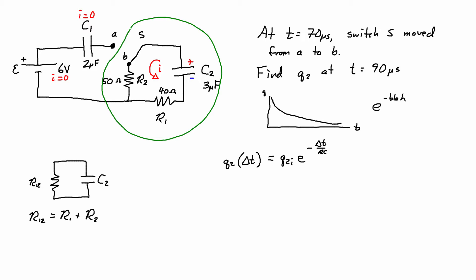The equivalent resistance of resistors in series is just the summation of them. So we have just R1 plus R2. So we have our 40 ohms plus our 50 ohms and we get a 90 ohm equivalent resistor.